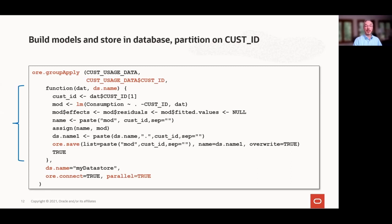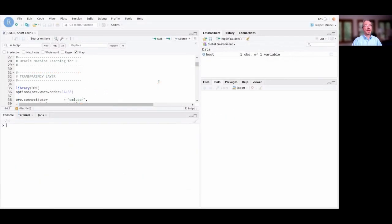Using the group_apply functionality, the requested number of R engines are spawned in parallel — loading the user-defined function and automatically passing one partition of data to each R engine to build models until all data is processed. The resulting models can be stored in the database in the R data store rather than as separate R data files. Using ore.groupApply, we pass in our customer data proxy object, partition on customer ID, and pass in the user-defined function.